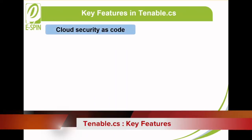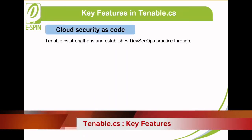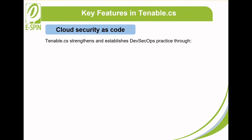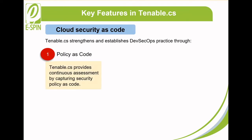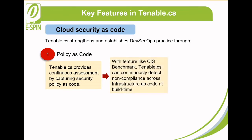Cloud security as code. Tenable CS focuses on strengthening and establishing your DevSecOps practice through policy as code. Tenable CS provides continuous assessments by capturing security policy as code, for example, CIS benchmarks. With this feature, Tenable CS continuously detects non-compliance across infrastructure as code at build time and at the same time enforces security policies before deployment.